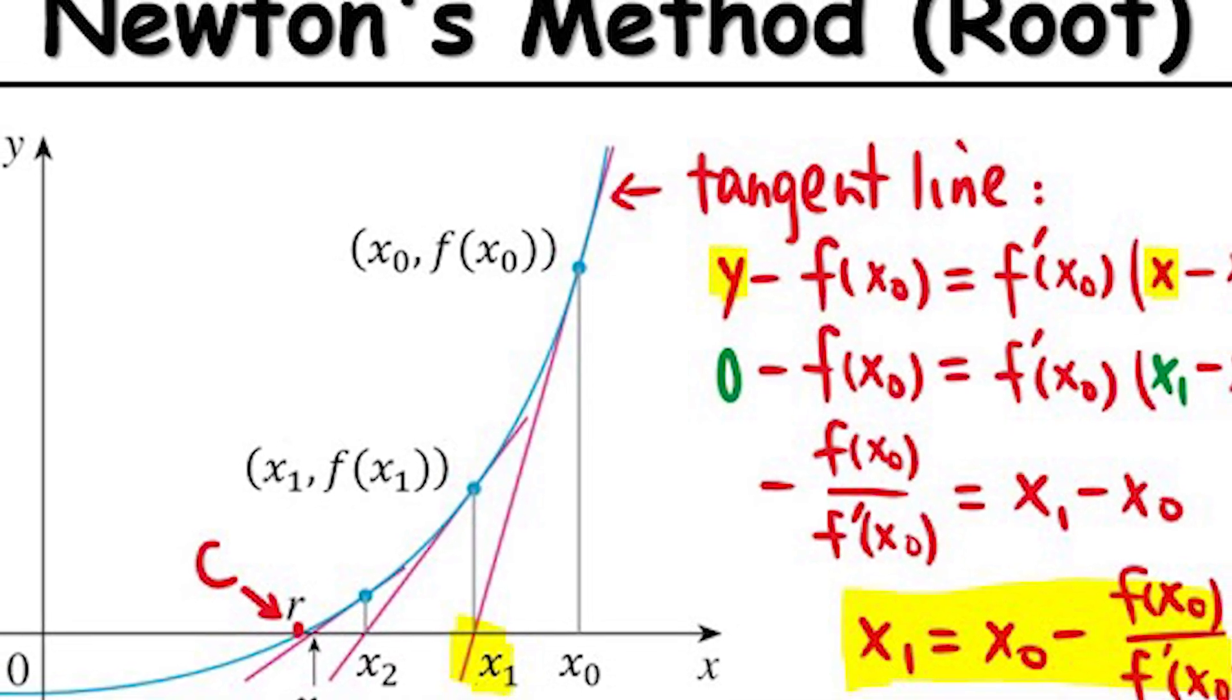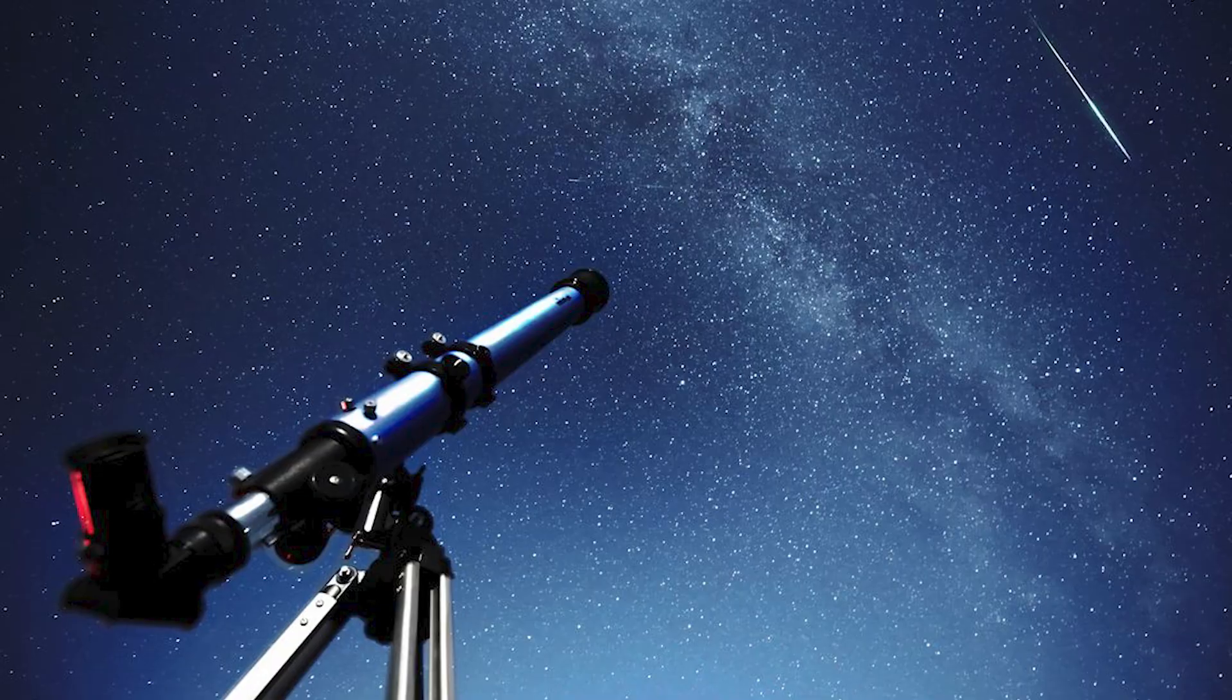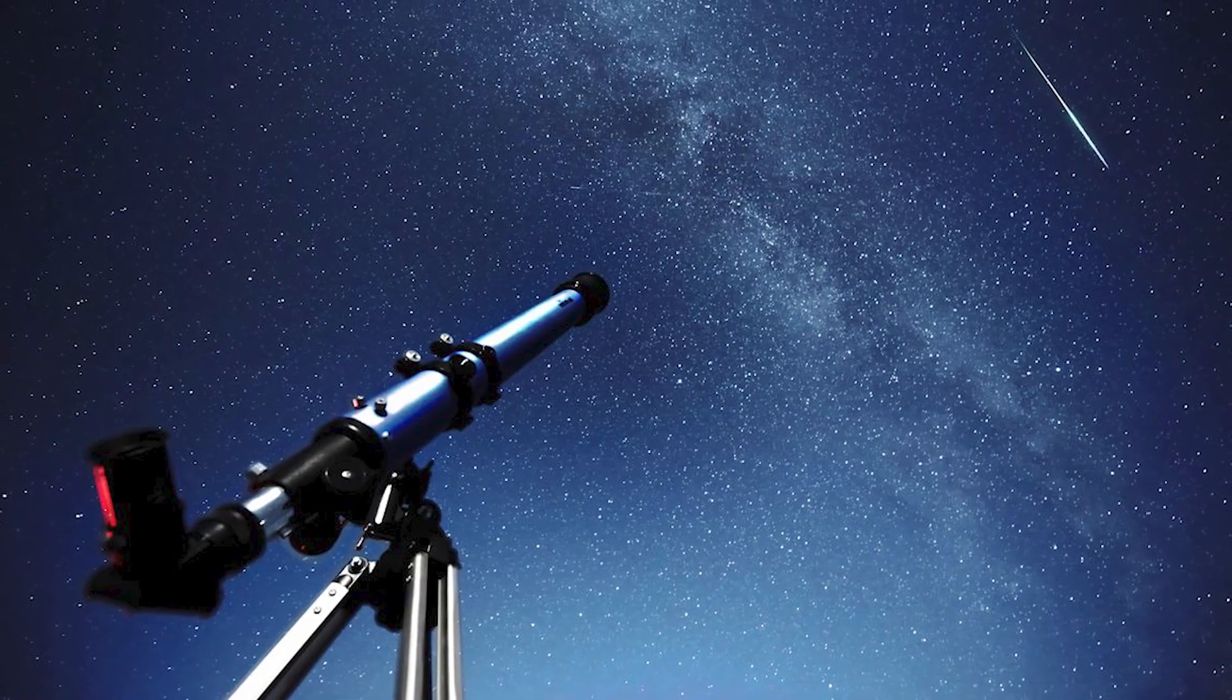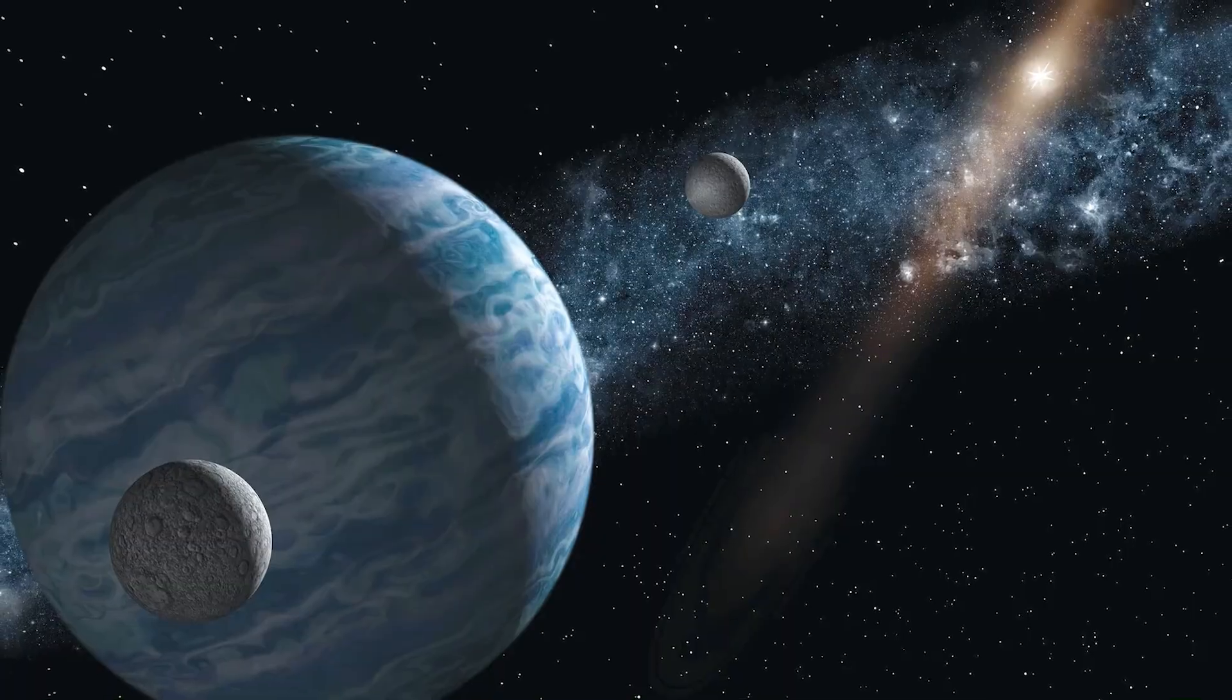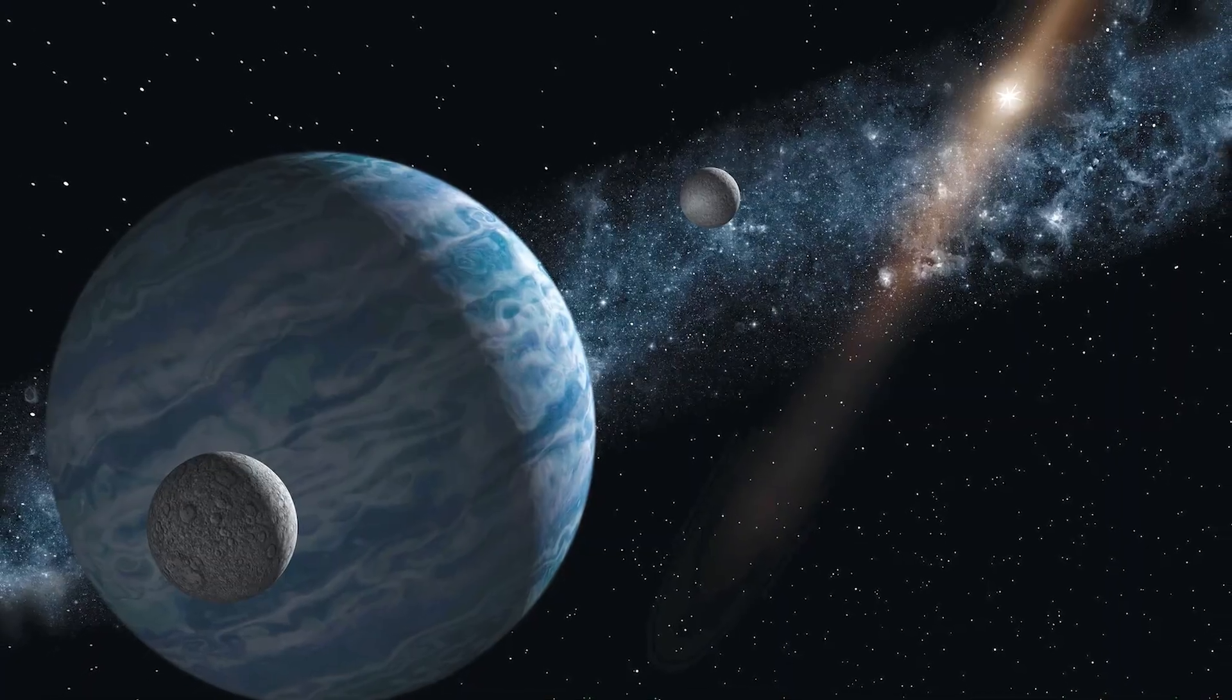They did the math, calculated where this mystery planet should be, and pointed their telescopes at that spot. And there it was: Neptune, exactly where the equations said it would be. Problem solved. The laws of gravity were fine. We just hadn't found all the planets yet.